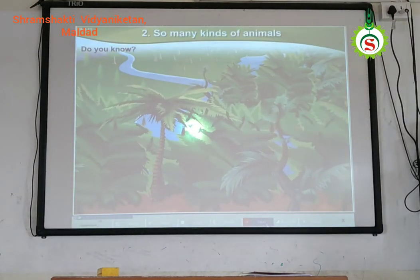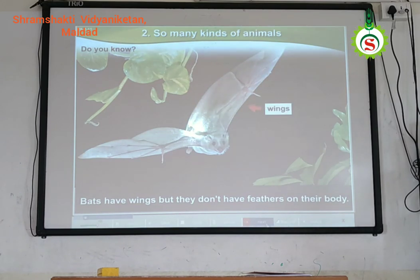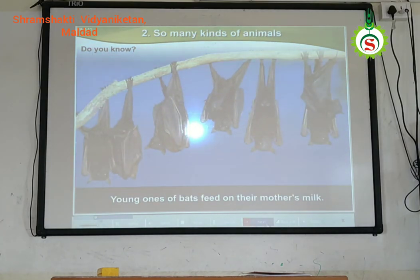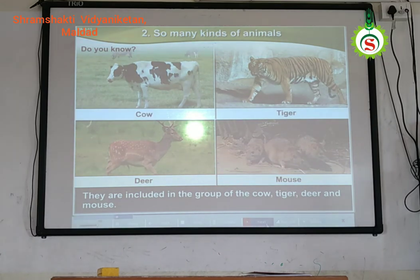Do you know? Bats have wings but they do not have feathers on their body. Young ones of bats drink their mother's milk. Bats are not birds like the crow, sparrow, parrot, and cock. In fact, they are included in the group of the cow, tiger, and deer — and by now, even you know why.